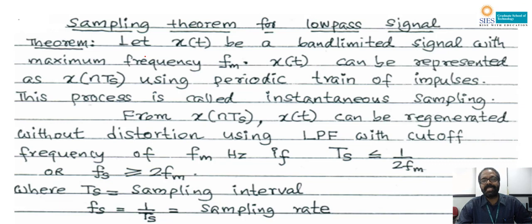So at every Ts seconds the switch can be closed, that input will come at the output side, and we are converting x(t) into x(nTs). From x(nTs), the original signal can be regenerated without any distortion if we are able to get at least twice fm samples per second.